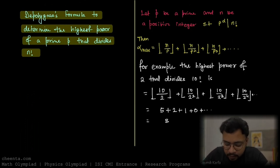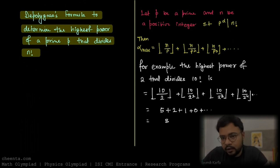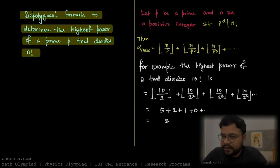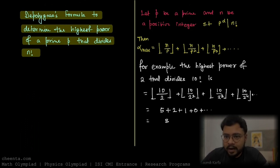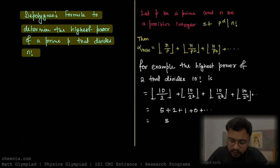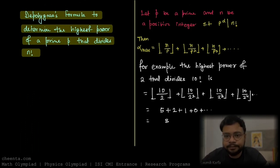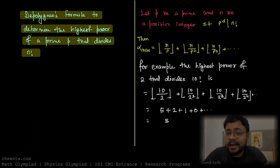For example, the highest power of 2 that divides 10 factorial: floor(10/2) + floor(10/4) + floor(10/8) + floor(10/16) + ... = 5 + 2 + 1 + 0 + ... = 8. So 2 to the power of 8 divides 10 factorial, and that is the highest such power. 2 to the power of 9 cannot divide 10 factorial.